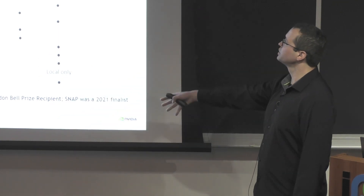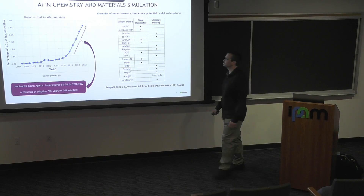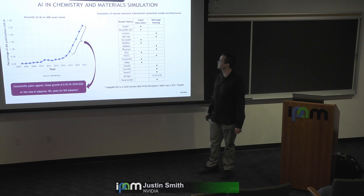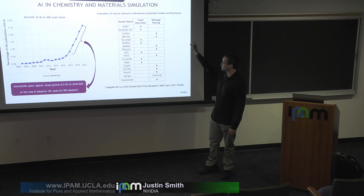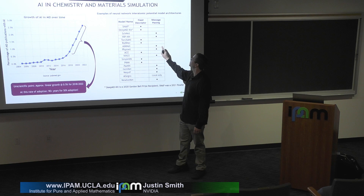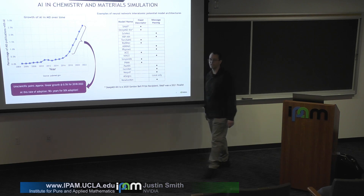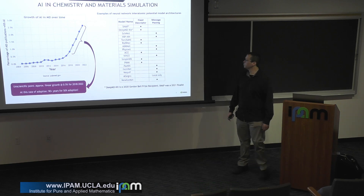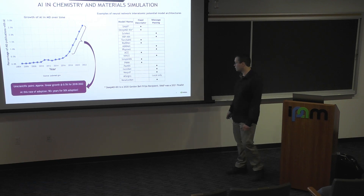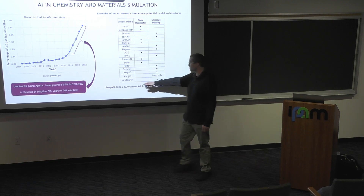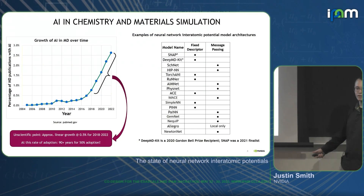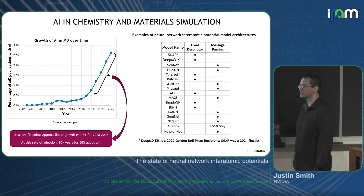There's a whole bunch of models in the space of neural network potentials. SNAP is usually used as linear, but they've been playing around with neural networks. There's a whole list of amazing models — fixed descriptor-based models and message-passing-based models with implicit long-range interactions built in. Notably, DeepMD-kit in 2020 won the Gordon Bell Prize, and SNAP was a finalist in 2021.